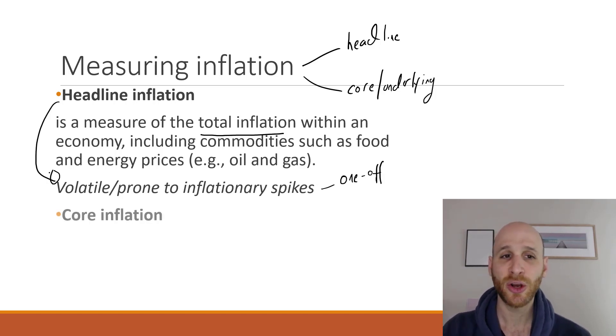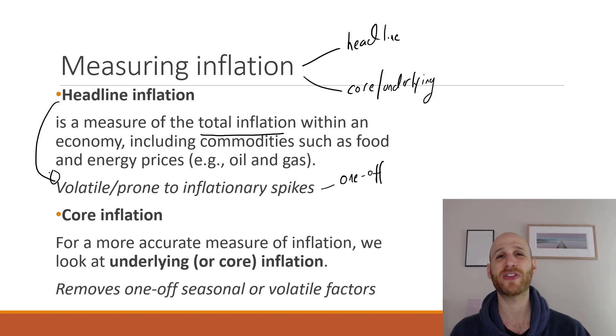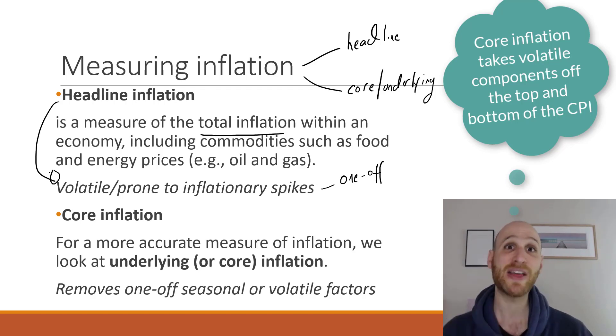So instead, what we have is another measure called core inflation, sometimes also called underlying inflation. This gives us a more accurate measure of prices. And what it does is it takes out one-off or volatile components at the top and the bottom to give us a more accurate picture of what is happening with inflation in an economy.